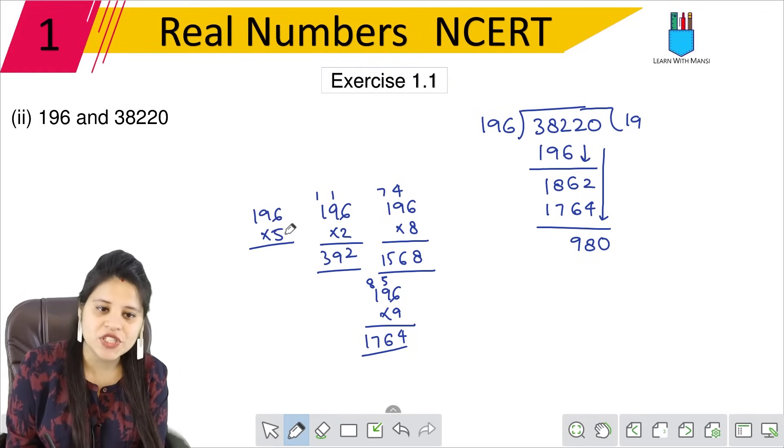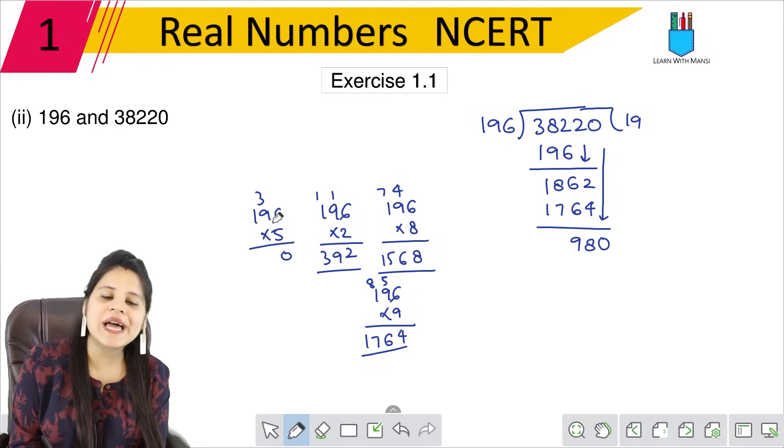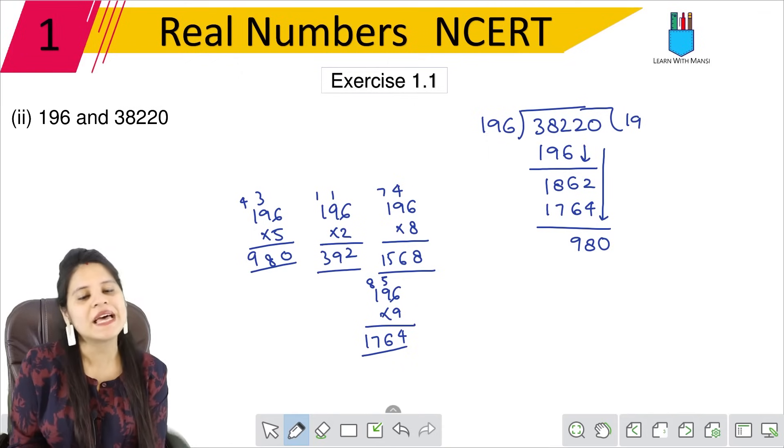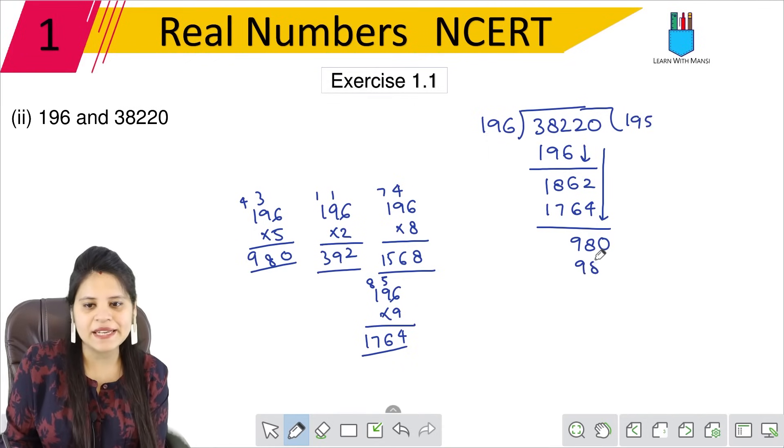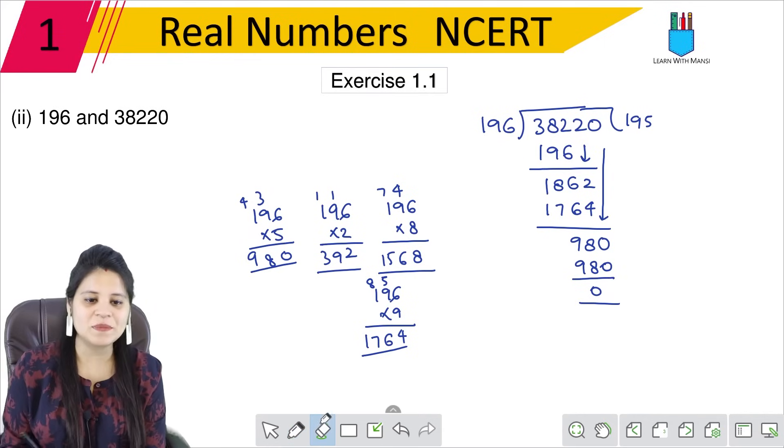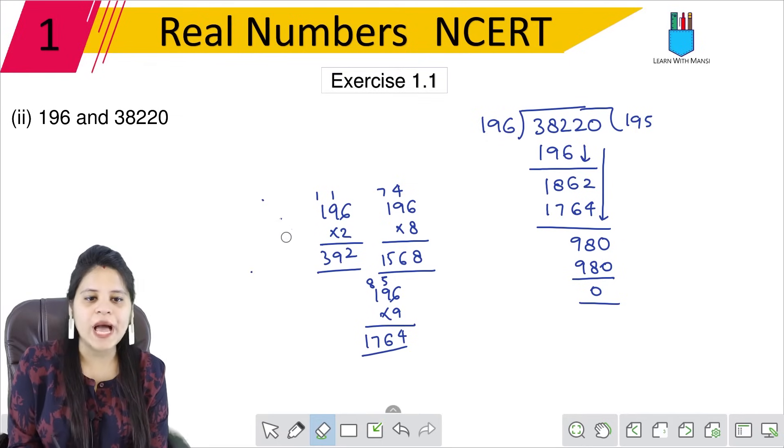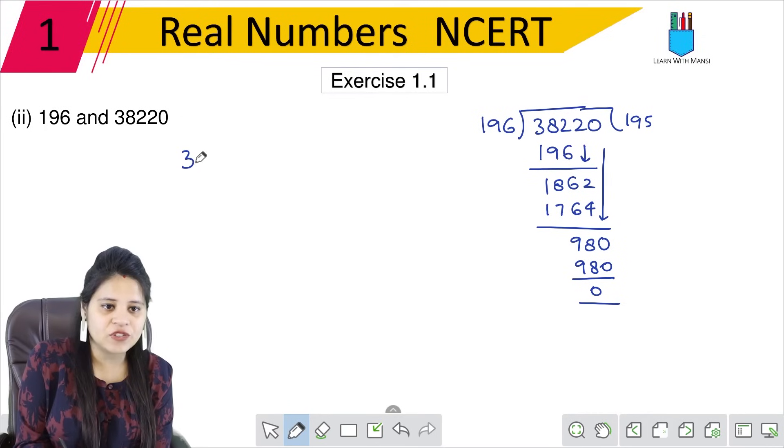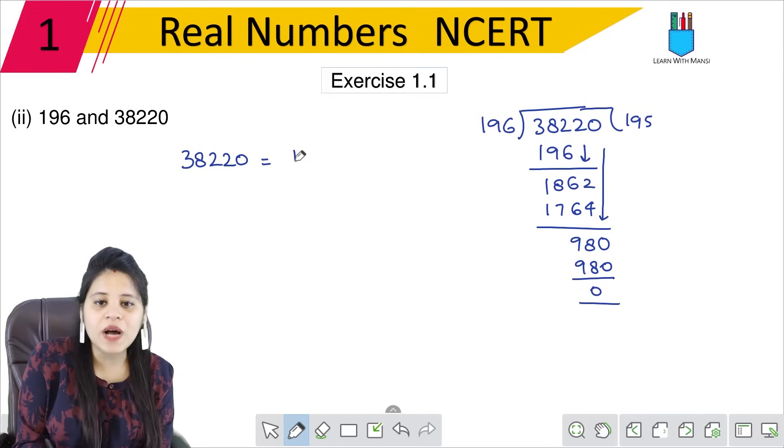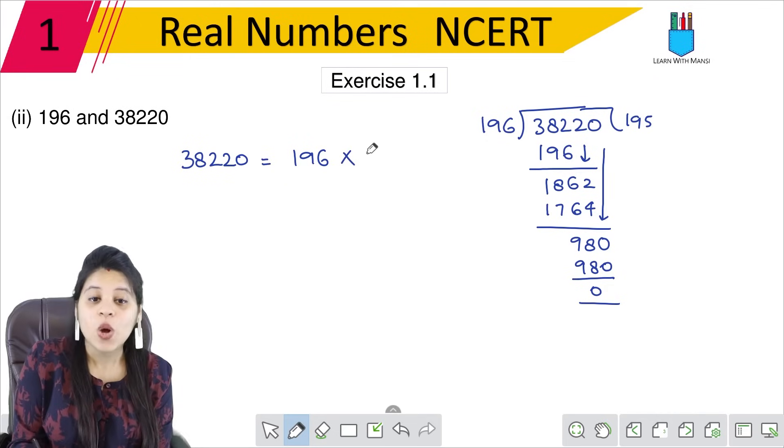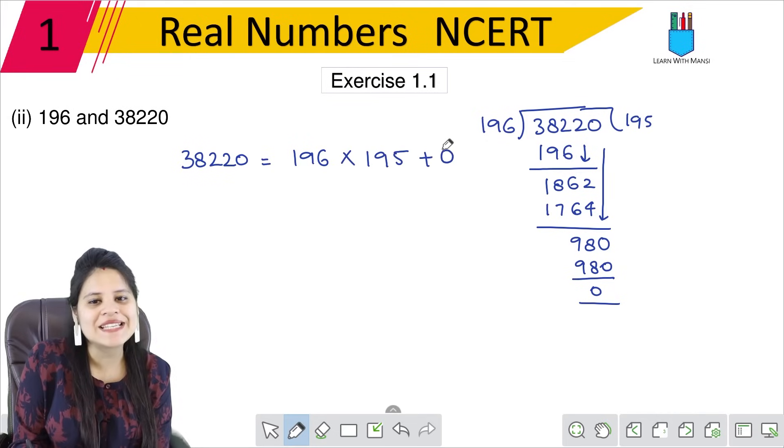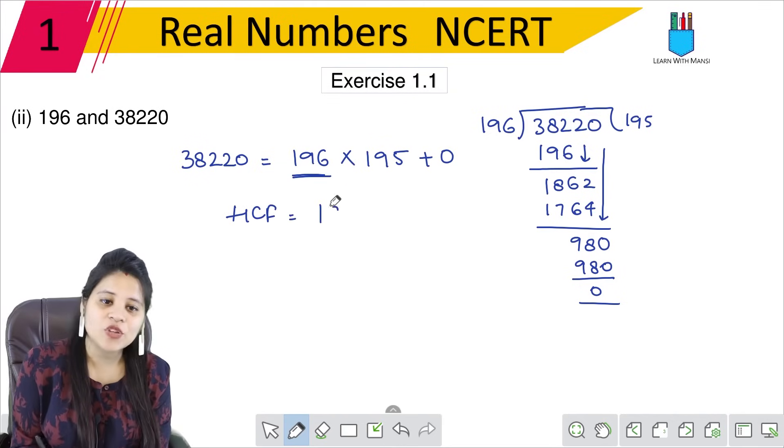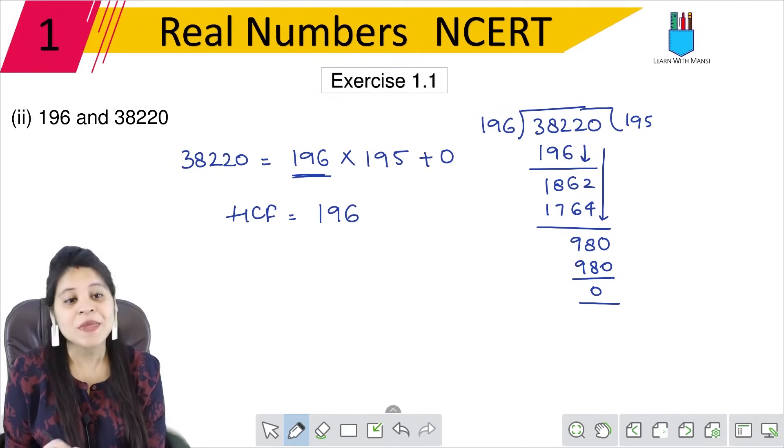We can write 38220 equals 196 into 195 plus 0. Now, what will HCF be? The last divisor was 196. So HCF will be 196. This was the second part. Next part.